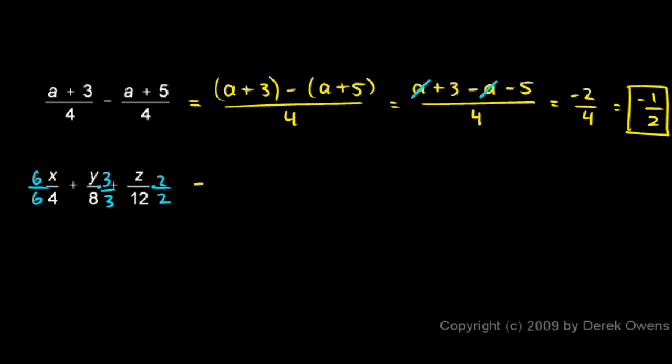So the entire expression becomes 6x/24 plus 3y/24 plus 2z/24.